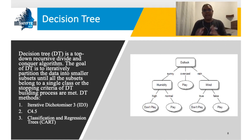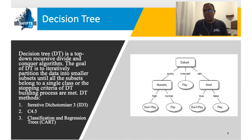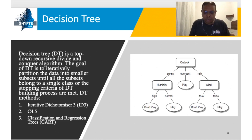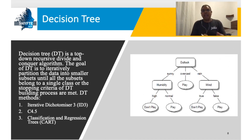In this talk we focus on decision trees for mining big data. Decision tree is one of the most popular machine learning algorithms — a top-down recursive divide-and-conquer algorithm. There are several popular methods for decision tree construction: the ID3 algorithm (Iterative Dichotomiser 3), C4.5 which is the successor of ID3, and CART — the Classification and Regression Tree algorithm.